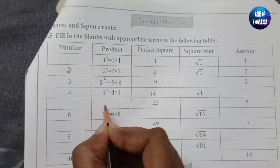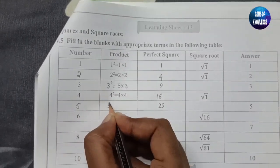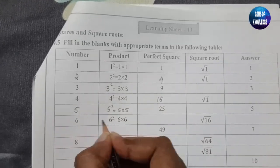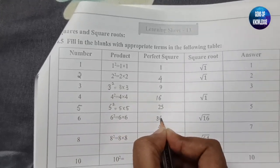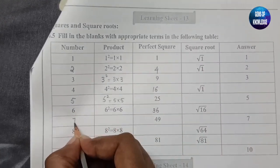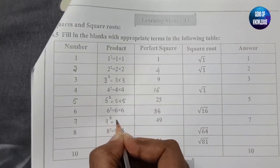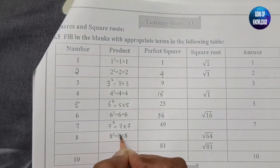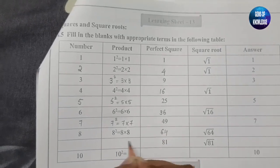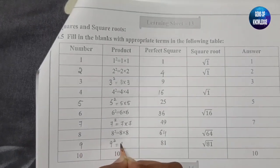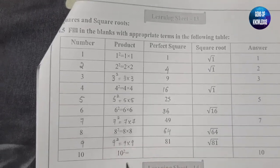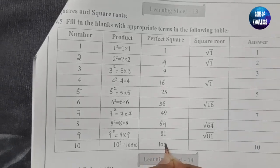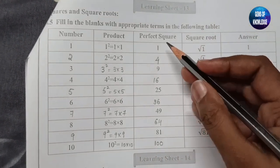Next, only 25 is written so we have to fill in the number 5. 5 squared equals 5 into 5, which is 25. Similarly, 6 squared is 6 into 6, which is 36. Next, 49 is given — that is 7 squared, which is 7 into 7 = 49. Then 8 squared is 64, 9 squared is 81, and 10 squared is 10 into 10, which equals 100. These are the perfect squares.